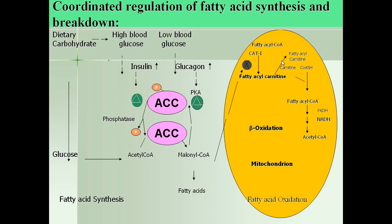Coordinated regulation of fatty acid synthesis and breakdown: in response to high blood glucose, insulin is promoted, converting more acetyl-CoA into malonyl-CoA, which stops carnitine acyltransferase 1 in mitochondria. In case of low blood glucose, acetyl-CoA carboxylase (ACC) becomes phosphorylated and inactive. After inactivation, this activates carnitine acyltransferase 1 in mitochondria and inhibits the synthesis of fatty acids.